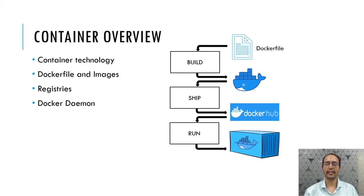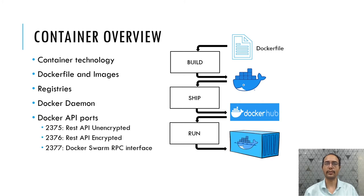The Docker daemon is a resident process that manages the execution of a container, and it communicates over API ports 2375, 2376, and 2377. Enterprises have adapted to this technology and started relying on it to deliver applications and software.